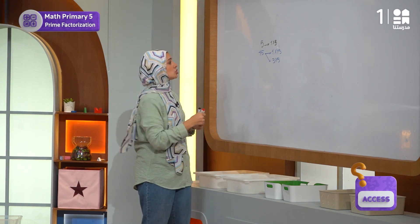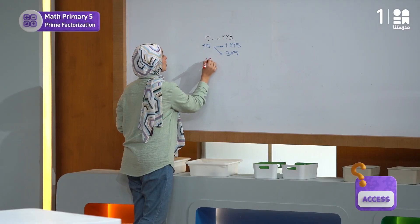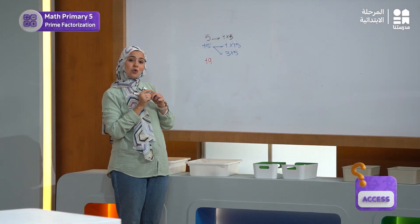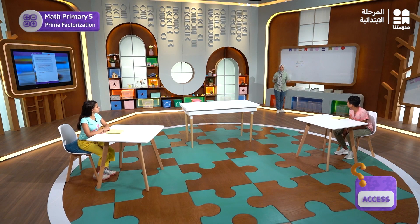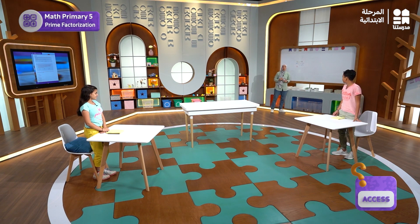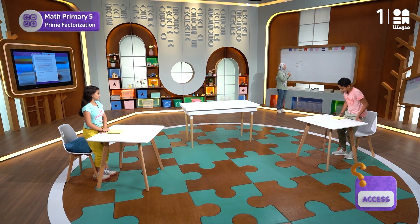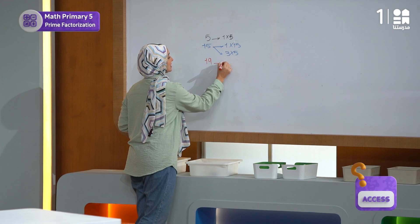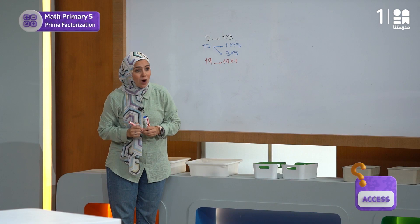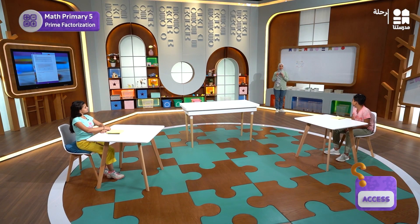Are you ready for the next number? So if I have the number 19, are we going to stand or sit? Stand. Very, very good. Are you with us, friends at home? I hope you are. Sit down. Because the factors of 19 are 19 times 1 or 1 times 19. In other words, it's a prime number.